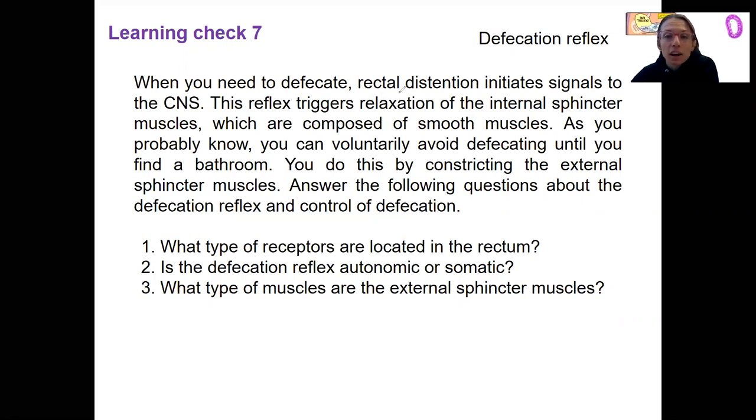Some key things here: we've got rectal distension initiating some signal, we've got an internal sphincter made of smooth muscles, we've got an external sphincter as well that is voluntary.